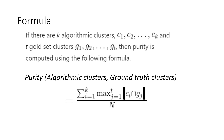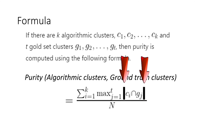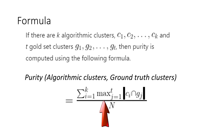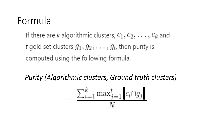Getting back to the equation: we compute the intersection between the i-th algorithmic cluster and the j-th ground truth cluster, which gives the row indices common between them. We take the length of that intersection — how many data points are common between the i-th algorithmic cluster and the j-th ground truth cluster. We maximize this intersection length over all ground truth clusters for each algorithmic cluster Ci. The maximum intersection lengths for all algorithmic clusters are summed to get the numerator, then divided by the total number of points n, normalizing the measure to a fraction between 0 and 1.